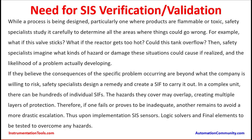We have seen in earlier presentations about independent protection layers. Different layers are built, and in some cases they may overlap each other. If there is a failure of the first layer, for example the DCS protection layer, the safety instrumented system layer comes into picture to take action. If the SIS protection layer fails, the mechanical relief valve layer comes into picture. Many independent layers are there which can act independently.